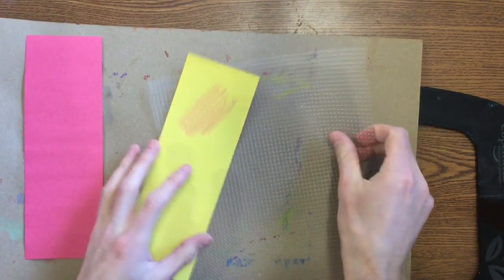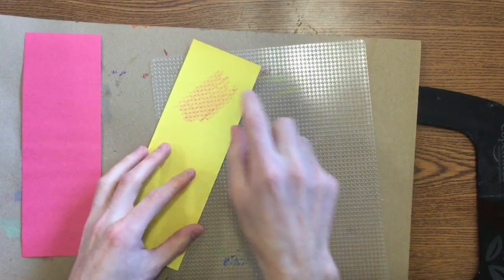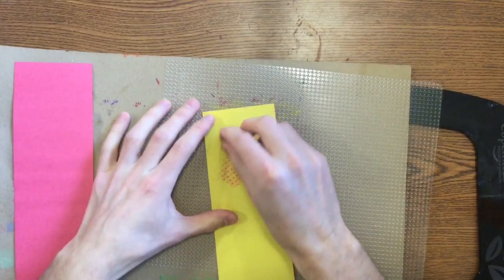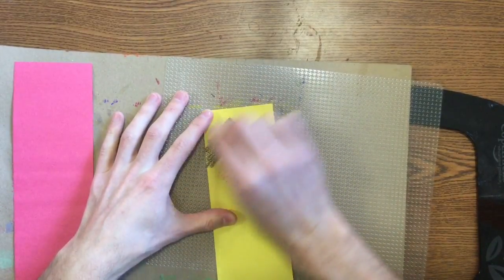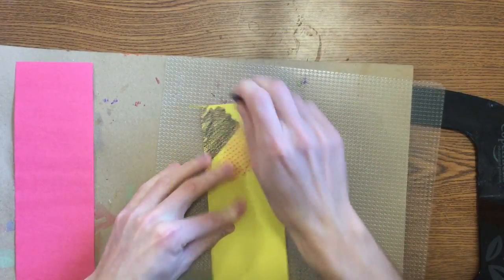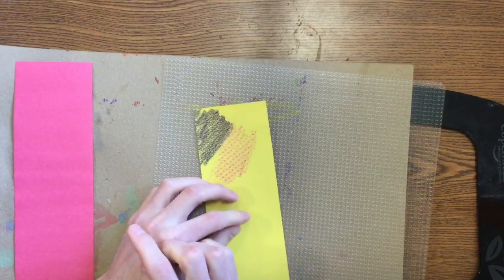The texture plates will give you two different textures. If I color it this way, I get all these little dots. If I flip it over, I get another texture. Some of the textures will show up better than others. You see this one's kind of a small texture, so it's harder to see, but these two textures look different.